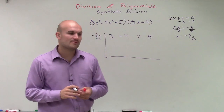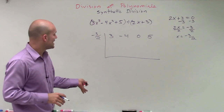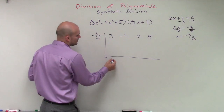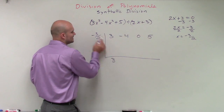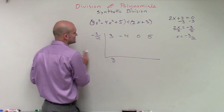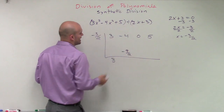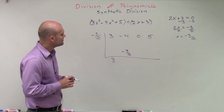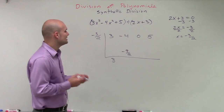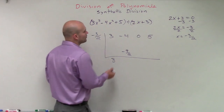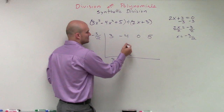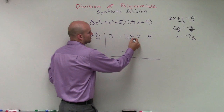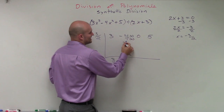We bring down the first term — just 3. Then 3 times negative 3 halves gives negative 9 halves. We add that to negative 4: to do that, we convert negative 4 to negative 8 over 2 by multiplying by 2 over 2.